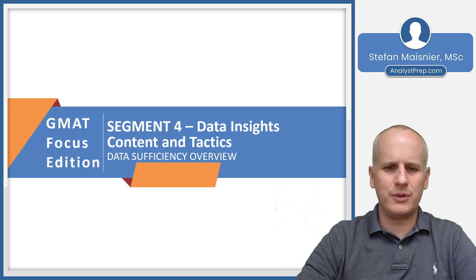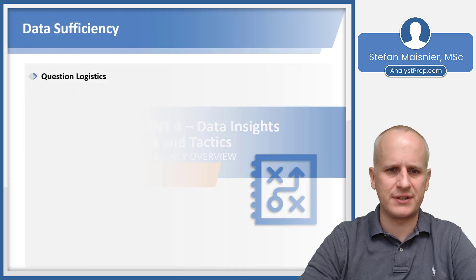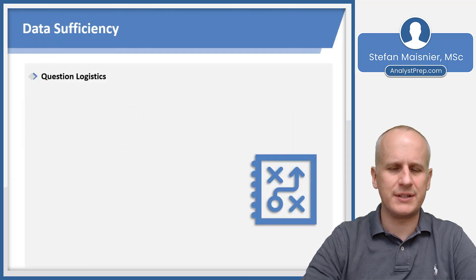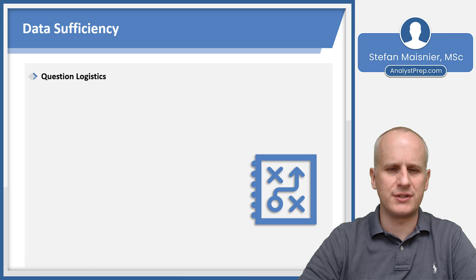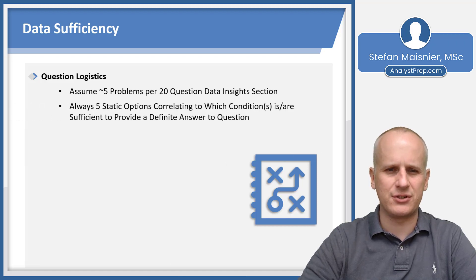In this lesson, we will cover the basic approach for one of the five question formats you will encounter on the data insights section of the GMAT Focus Edition, and that is going to be the data sufficiency. So let's begin just by recapping the logistics for this question type. You'll want to assume that about five of the 20 question data insights section questions are going to be data sufficiencies.